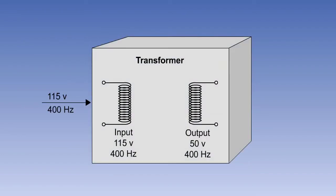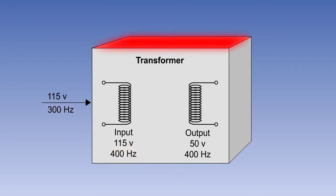It is important that the input supply to the primary coil of a transformer is of the correct frequency. Transformers are inductive devices, and if the input frequency is low, it is possible that the transformer will overheat due to excessive current flow.